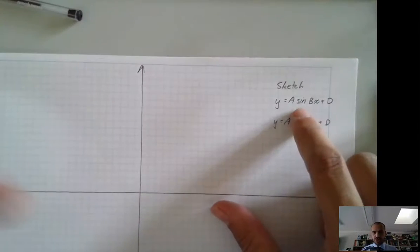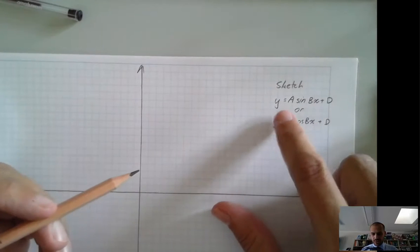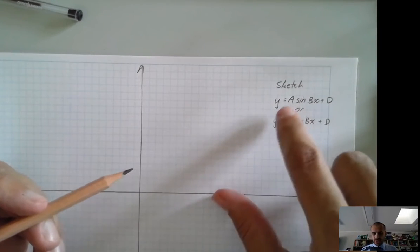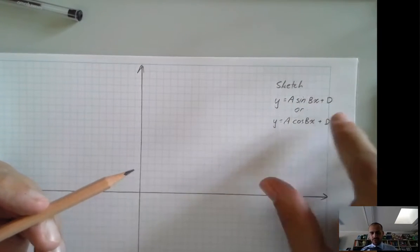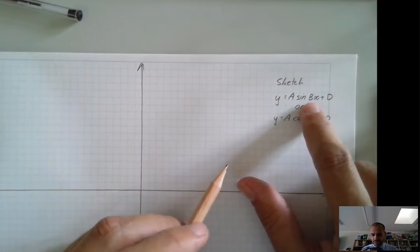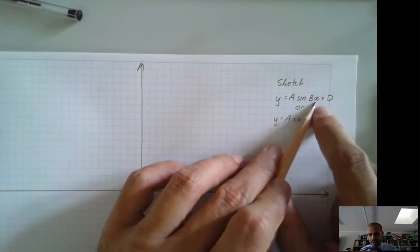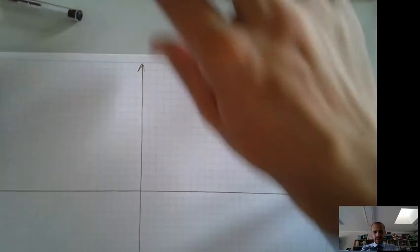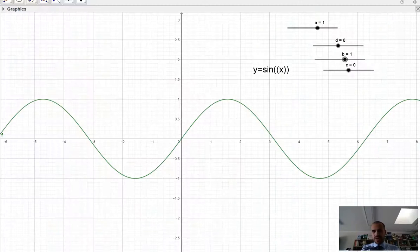All right, so if you've been following along, we've sketched y equals just sine x. We've sketched y equals a sine x. We've sketched y equals a sine x plus d on the end. And now I've added in this extra bit, y equals a sine bx plus d. Now, let's take a look at how that works.